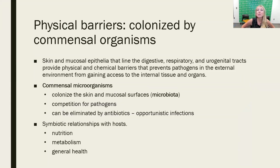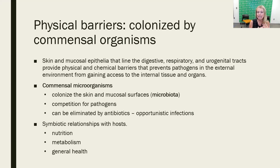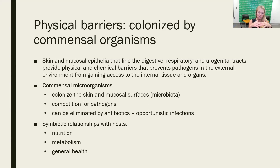Let's take a deeper look at those physical barriers — the first line. We have the skin, which is a huge organ, the largest organ of the body, with many layers. That outer layer is made up of squamous epithelial cells that are kind of overlapping each other like shingles, and that's going to prevent any pathogens from getting through those overlapping layers.